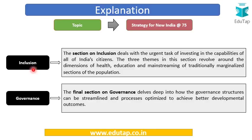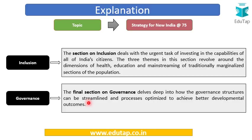The Inclusion section deals with the urgent task of enhancing the capabilities of India's citizens. The three themes in this section revolve around health, education, and mainstreaming the marginalized sections of the population. The Governance section talks about how governance structures need to be streamlined and processes optimized to achieve better developmental outcomes — for example, making the arbitration process more streamlined and simpler, and tackling the backlog of pending cases in different courts. This covers reforms in governance structure and processes as well.